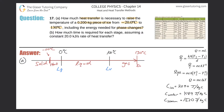Starting here and ending here, there are going to be five different things to calculate. First, getting from negative 20 to zero degrees Celsius for the solid. Second, the energy needed for the phase change from solid to liquid. Third, the energy to go from liquid water at zero degrees Celsius to 100 degrees Celsius. Fourth, the heat energy required to change phase from liquid to gas. Fifth, the energy to increase the gas temperature from 100 to 130 degrees Celsius.